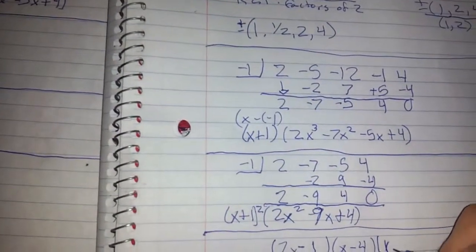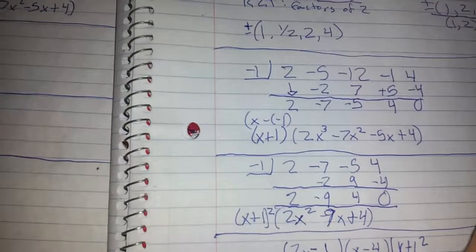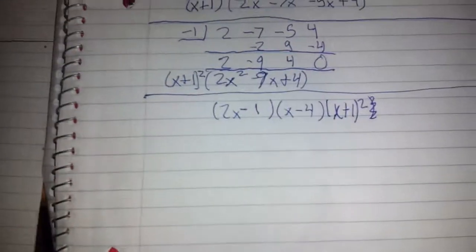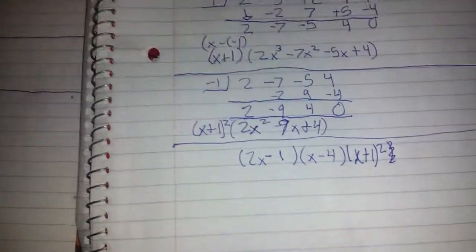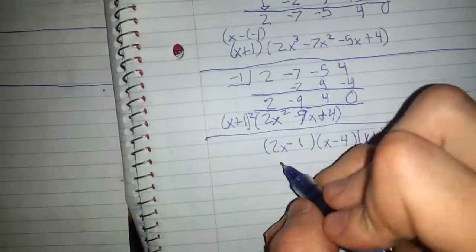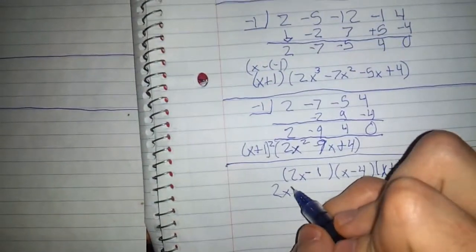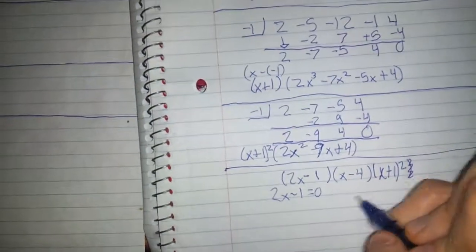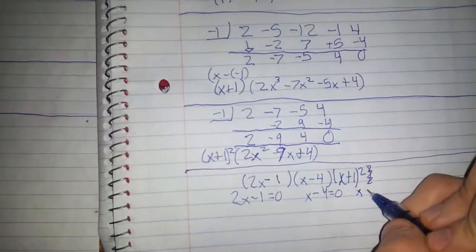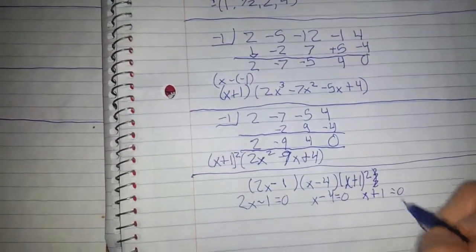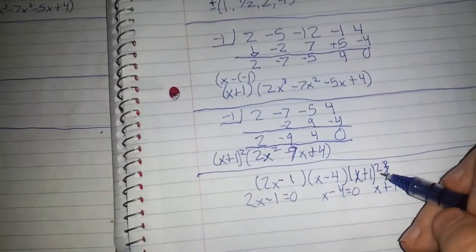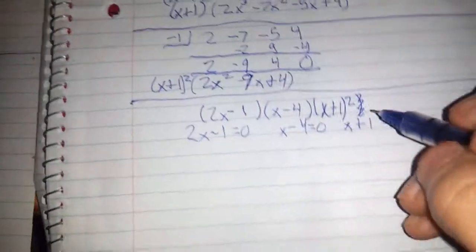It's x plus 1 squared here. And I like what we're seeing. We've got the possibility to write down all of our zeros. So let's set these all equal to 0. 2x minus 1 equals 0, x minus 4 equals 0, and x plus 1 equals 0. We're not going to use the second x plus 1 because this is a multiplicity of 2, and that counts only as 1 zero.